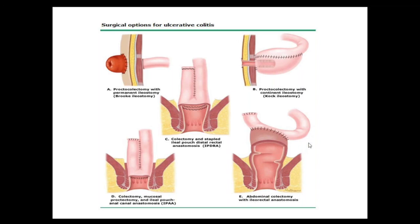In restorative proctocolectomy with IPAA, theoretically it is total proctocolectomy, but practically one to two centimeters of rectal cuff remains above the dentate line — approximately two centimeters with hand-sewn and approximately one centimeter with stapler anastomosis. This is a J-pouch: each limb is 15 centimeters long, and the pouch capacity should be 250 to 300 mL to replace normal rectal capacity. A double-stapled technique is used — the pouch is transected and from below a circular stapler creates the pouch-anal anastomosis.